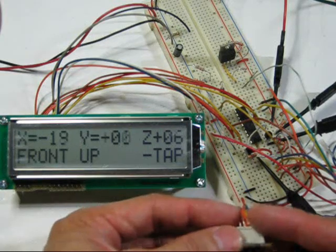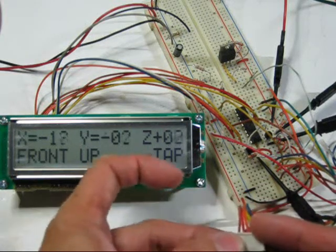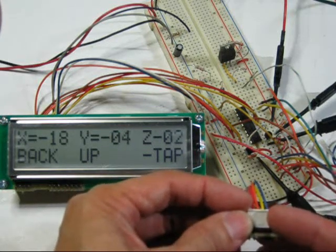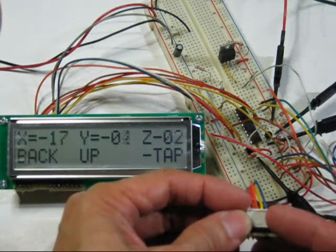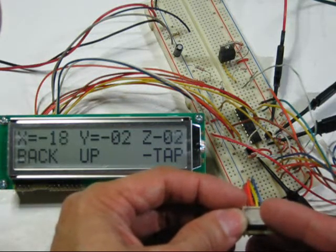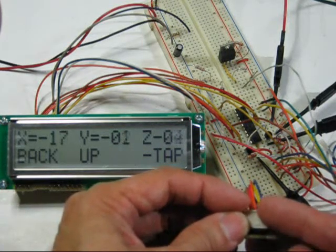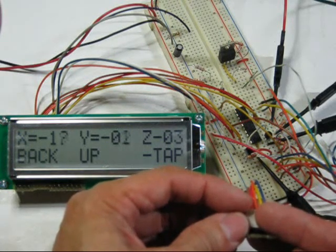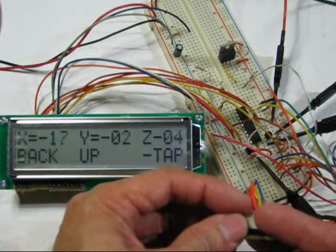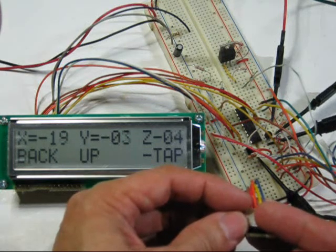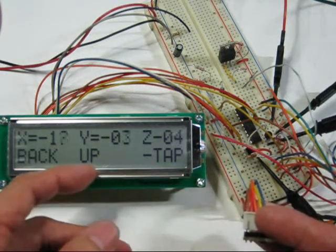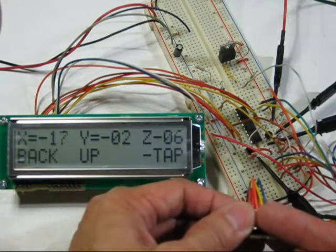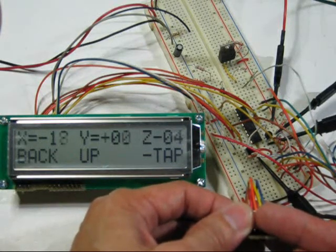Okay. You can also see the axis, the values for the axis changing. When it's facing up, x is actually measuring 1g, which should be approximately a value of 21, since this is a 6-bit value. So when it says facing up, that means the x-axis is experiencing negative 1g.